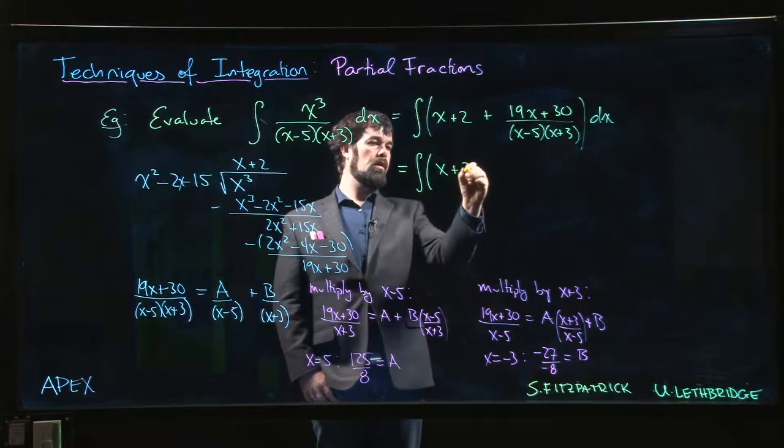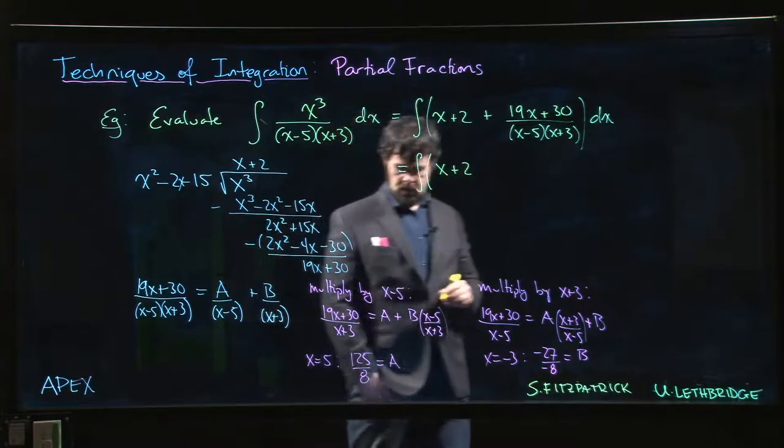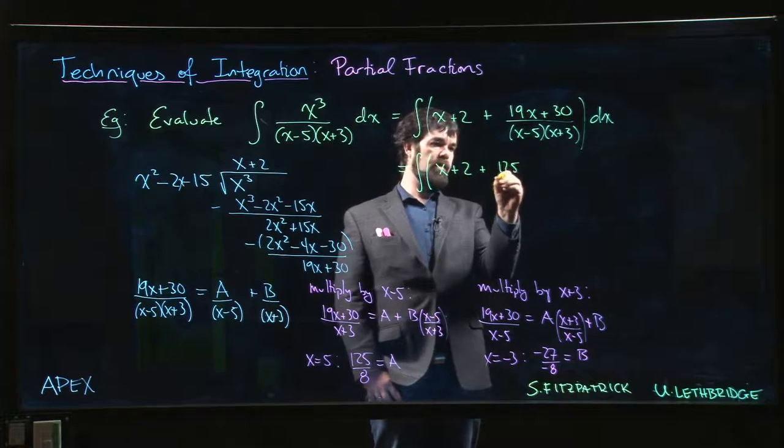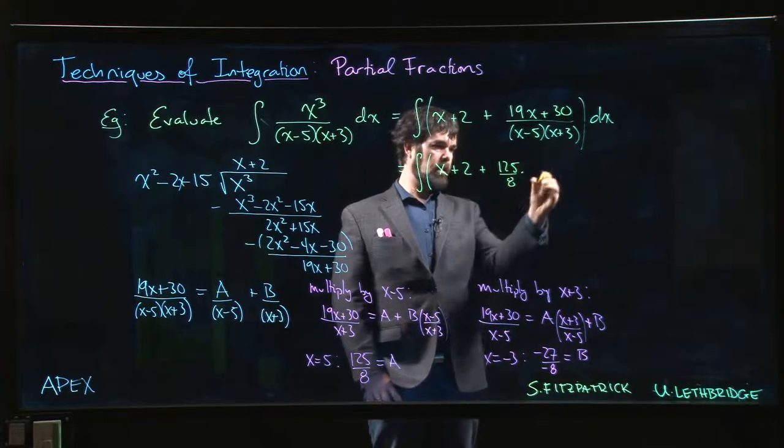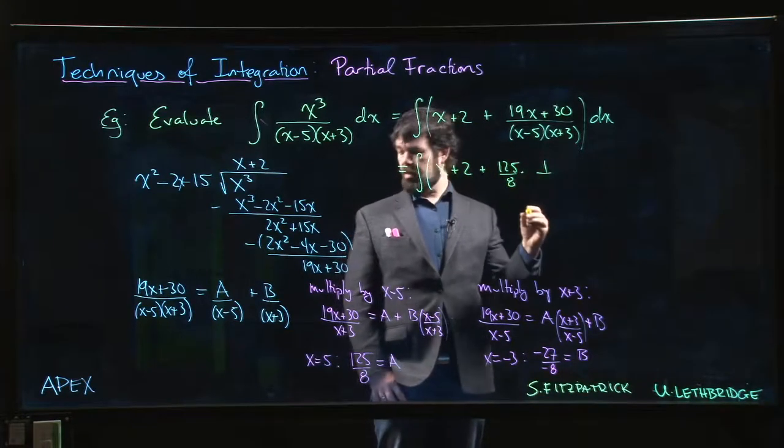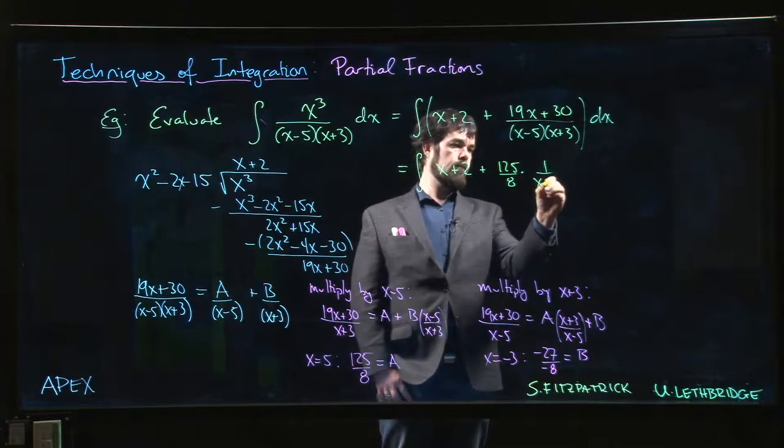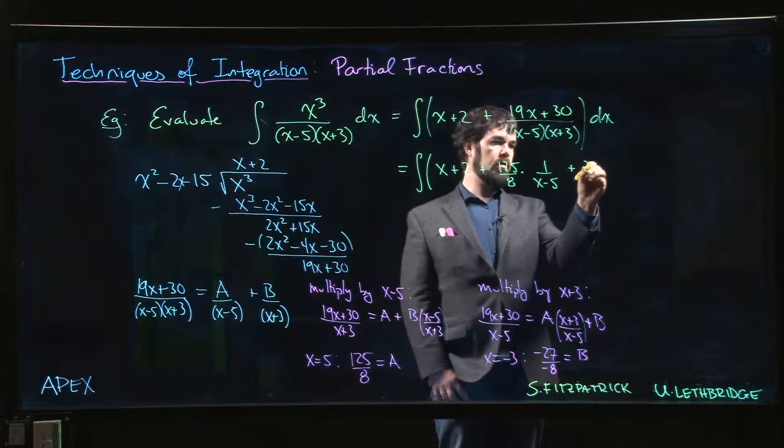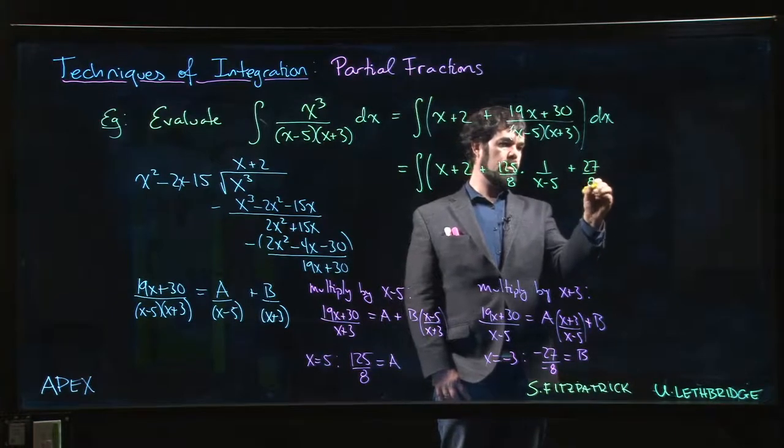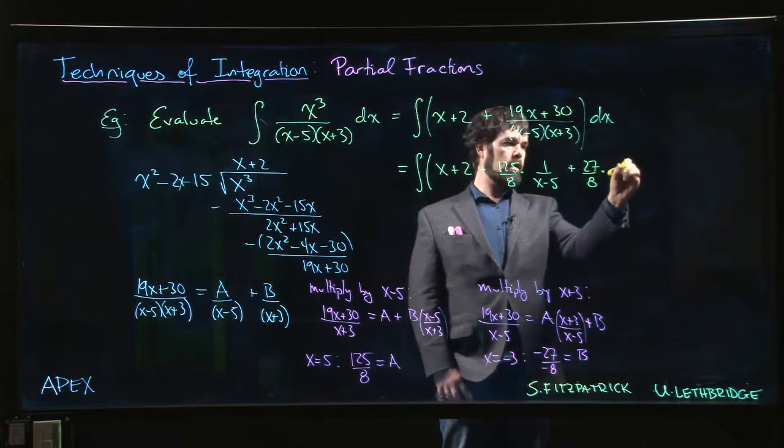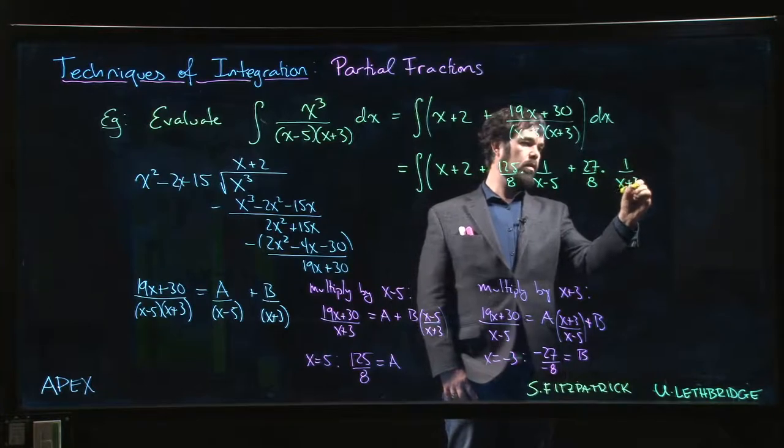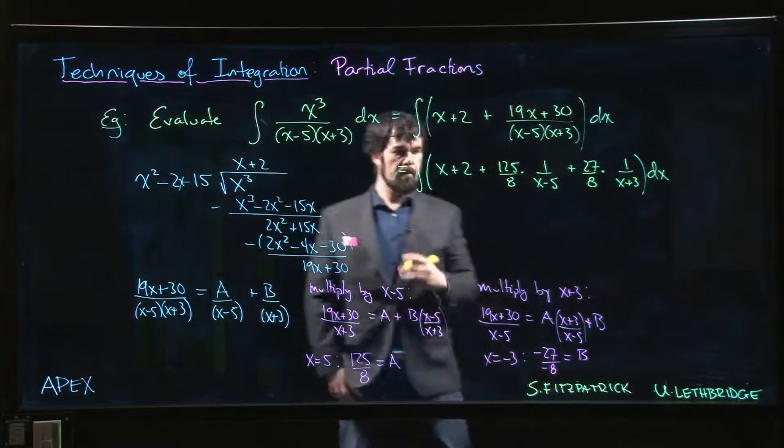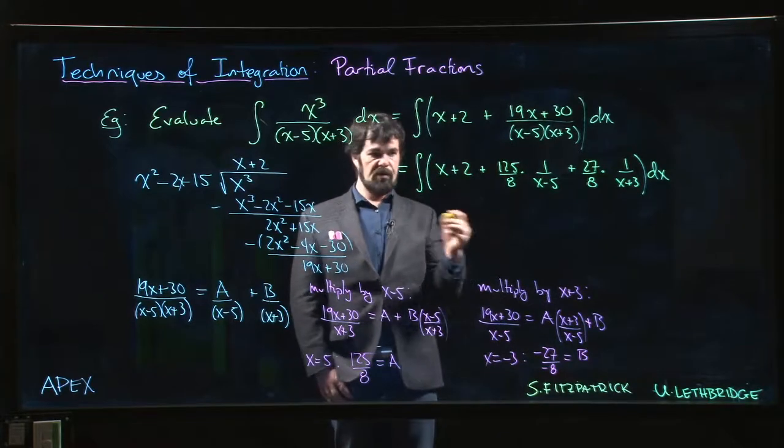So we have x plus 2, plus 125 over 8 times 1 over (x minus 5), plus 27 over 8 times 1 over (x plus 3). Now all that's left to do is integrate.